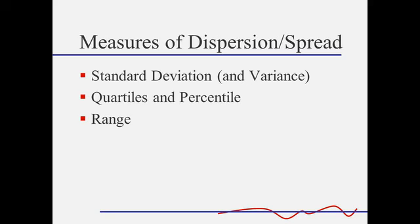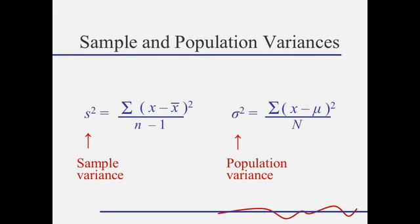The range is easy to compute—it's the maximum minus the minimum—but it's not terribly useful. So we're going to focus on standard deviation, variance, and the quartiles. These are the formulas for the sample variance and the population variance.